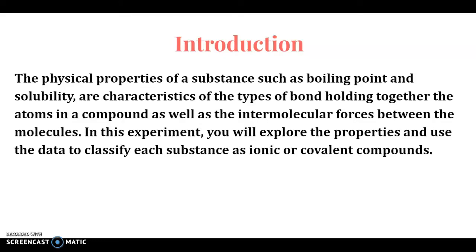The physical properties of a substance, such as boiling point and solubility, are characteristics of the types of bonds holding together the atoms in a compound, as well as the intermolecular forces between the molecules. In this experiment, you will explore the properties and use the data to classify each substance as ionic or covalent compounds.